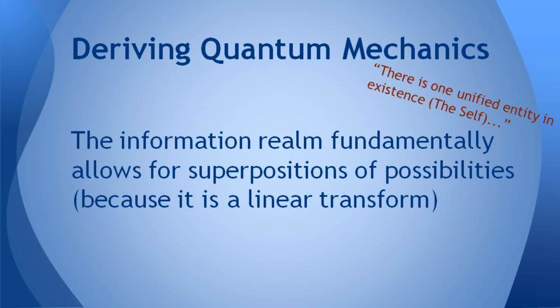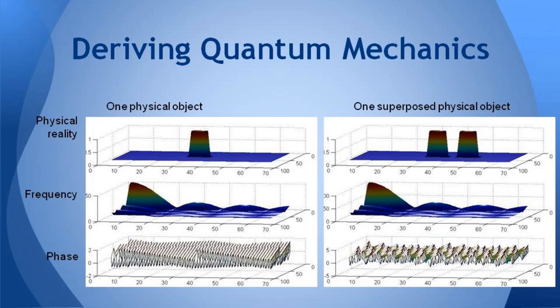Now I'm going to try and derive quantum mechanics. Again, there is one unified entity in existence, the self, in red. And the statement here is that in physics, the information realm fundamentally allows for superpositions of possibilities because it's a linear transform. So quantum superposition falls easily into the Fourier transforms. In fact, they're part of it in quantum mechanics.